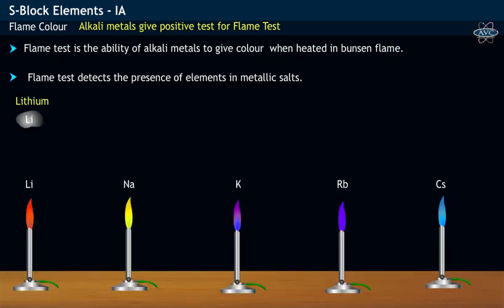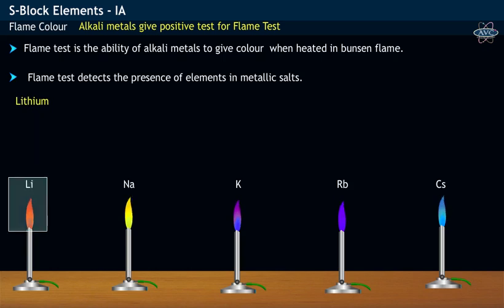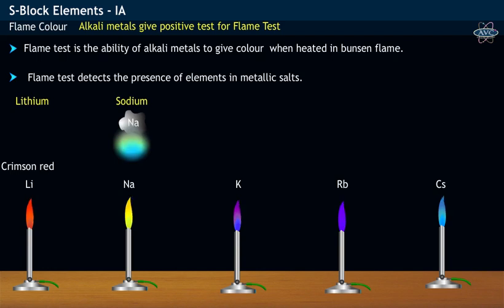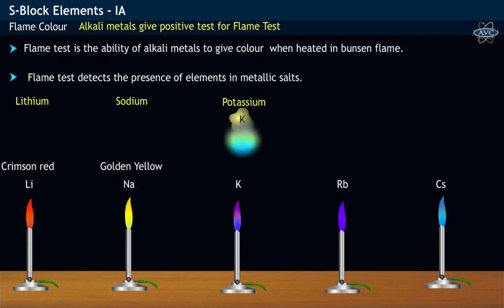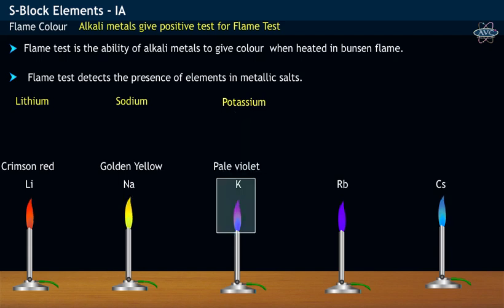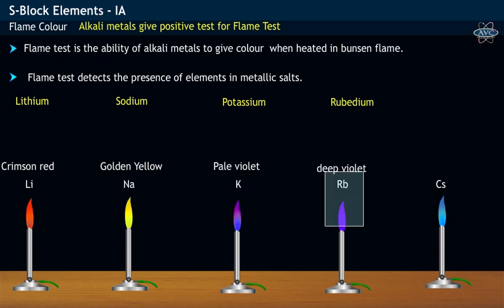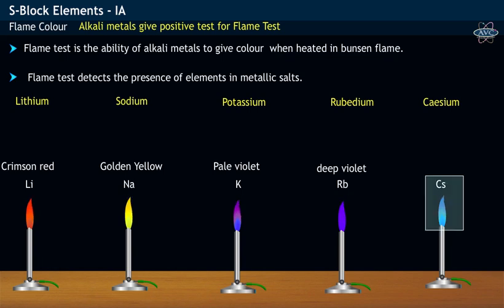When lithium metal in solid form is heated in Bunsen flame, it gives crimson red color. When flame test is conducted, sodium gives yellow color, potassium gives pale violet color, rubidium gives deep violet color, while finally cesium gives blue color.